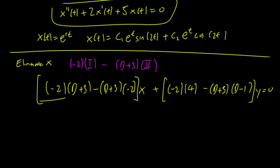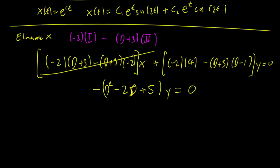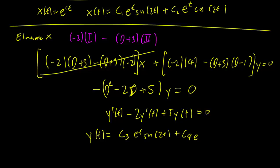So it turns out that when we do this again, the x cancels out here, we get the same equation. So we have -D² - 2D + 5y = 0, which again, we can ignore the minus sign because we have a 0 on the right hand side. We end up with y''(t) - 2y'(t) + 5y = 0. And again, we can find that y(t) = c₃e^t sin(2t) + c₄e^t cos(2t).